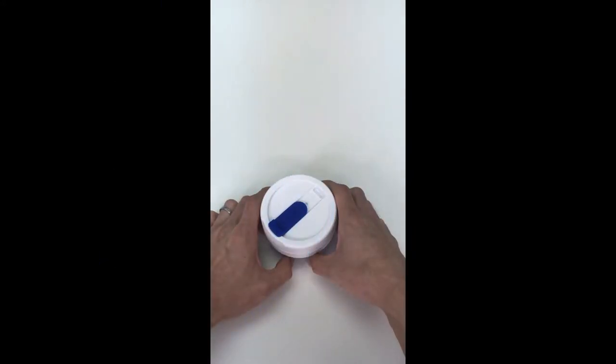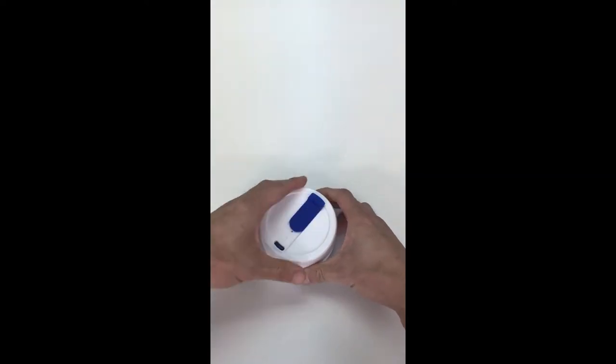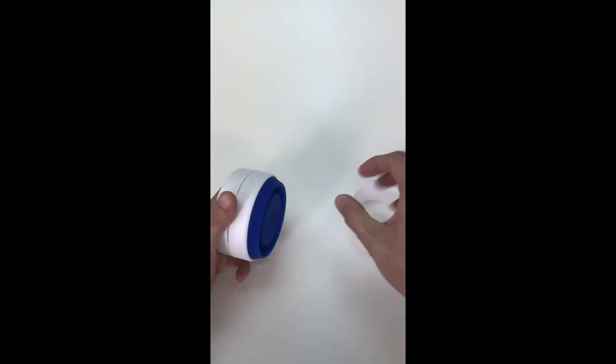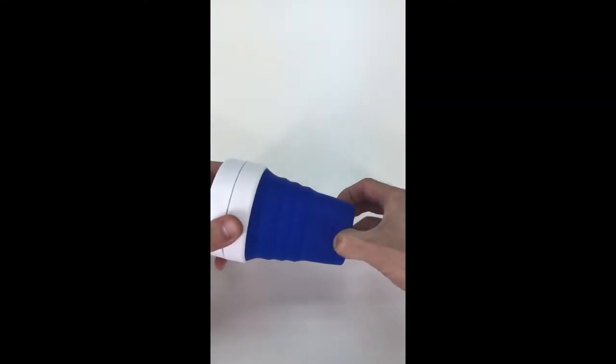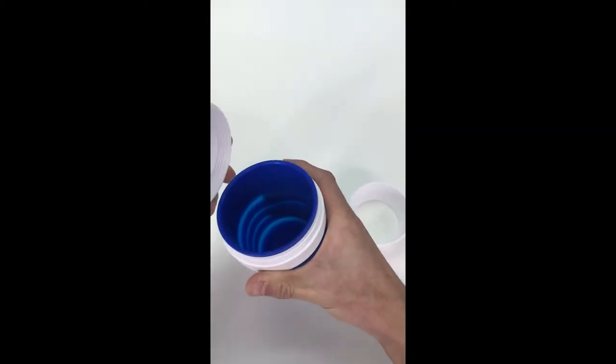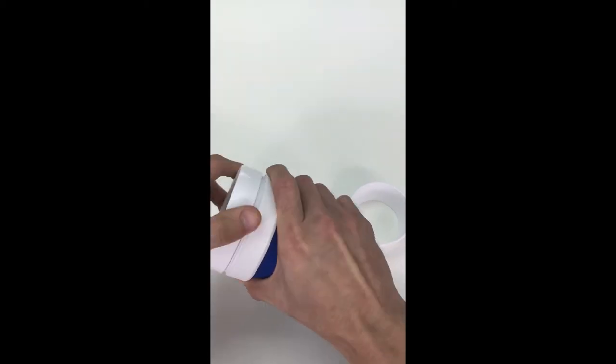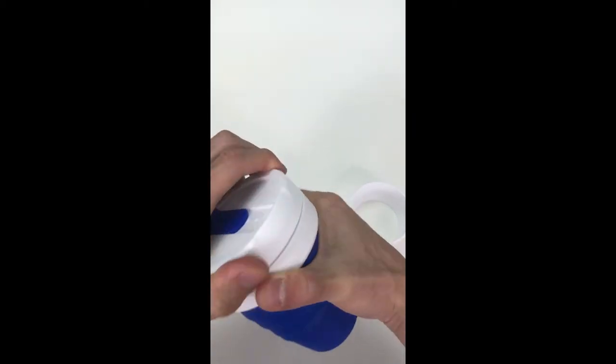So the first step to prepare Stojo is to open up the drinking tab, remove the heat sleeve, pull the cup out from the bottom, unscrew the lid, pour your drink in, and then screw the lid back on. Now make sure you tighten it fully to prevent spillage.